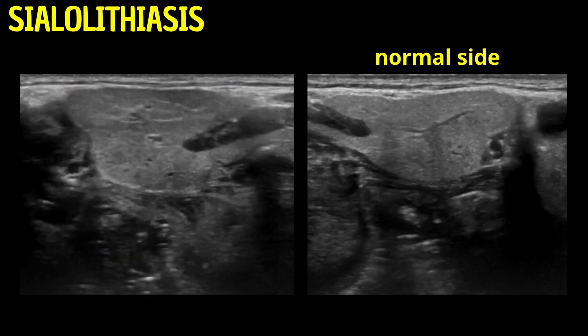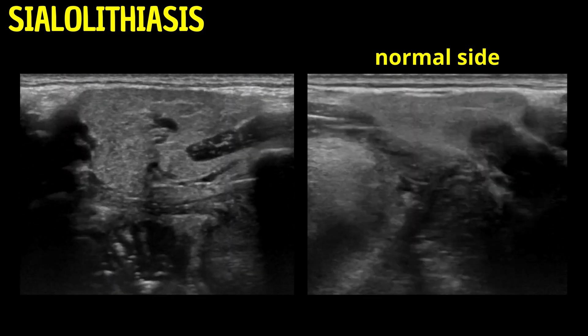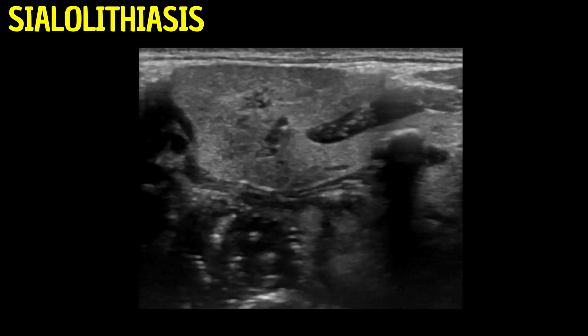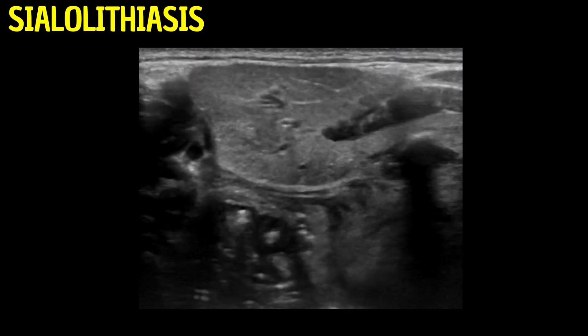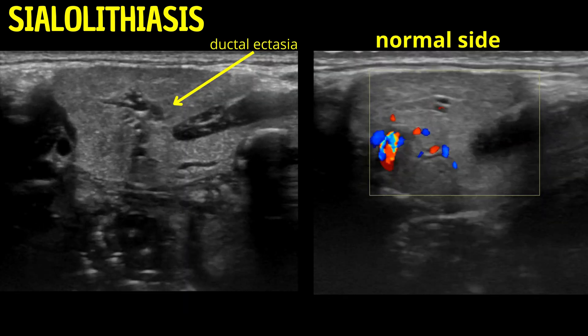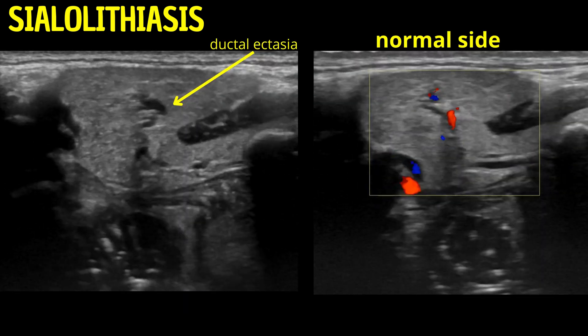As we progress to the second scene, a mild intraglandular ductal ectasia becomes apparent within the same gland. This finding suggests an obstruction within the ductal system, prompting a closer examination.